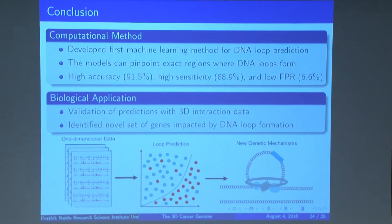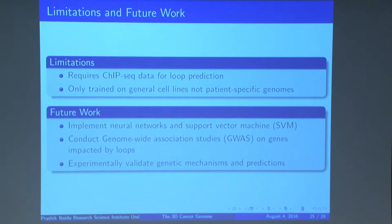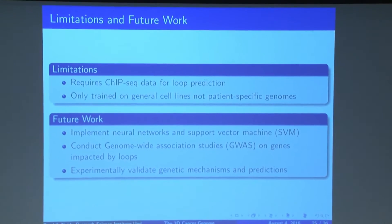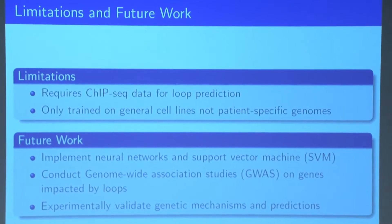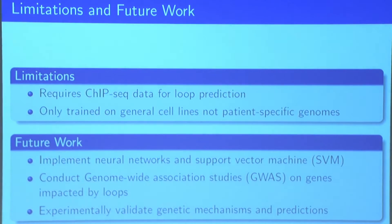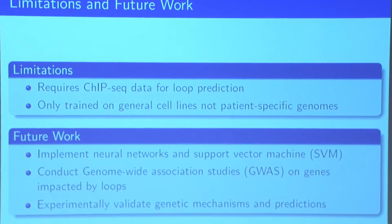In conclusion, we developed the first machine learning-based approach to specifically and accurately identify individual regions of DNA loops that form across the genome at a very high accuracy, high sensitivity, and low false positive rate. We validated this method on existing cell lines and were able to identify new sets of genes that could potentially provide insight into new genetic mechanisms for cancer progression. Limitations include the requirement for ChIP-seq data — though it is publicly available on many genomic databases — and that we only trained on general cell lines, so moving to personalized medicine will require sequencing individual patient genomes. For future work, we want to implement other neural networks, conduct genome-wide analysis, and experimentally validate these results.